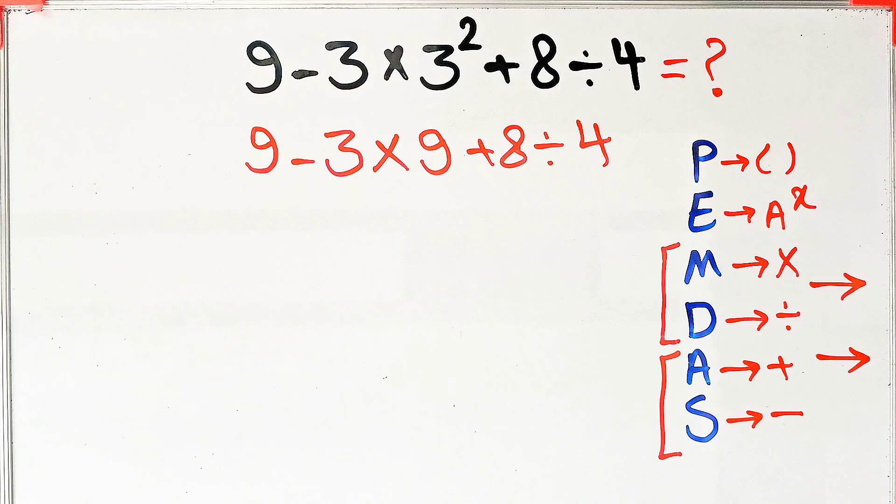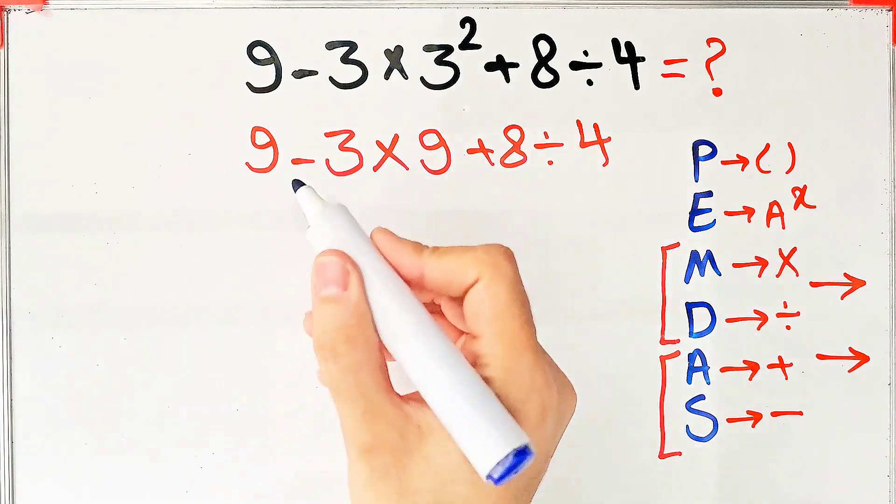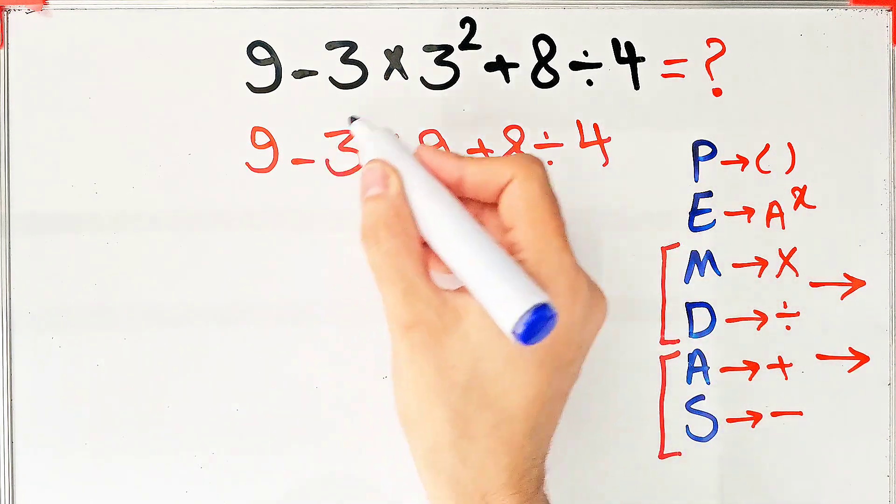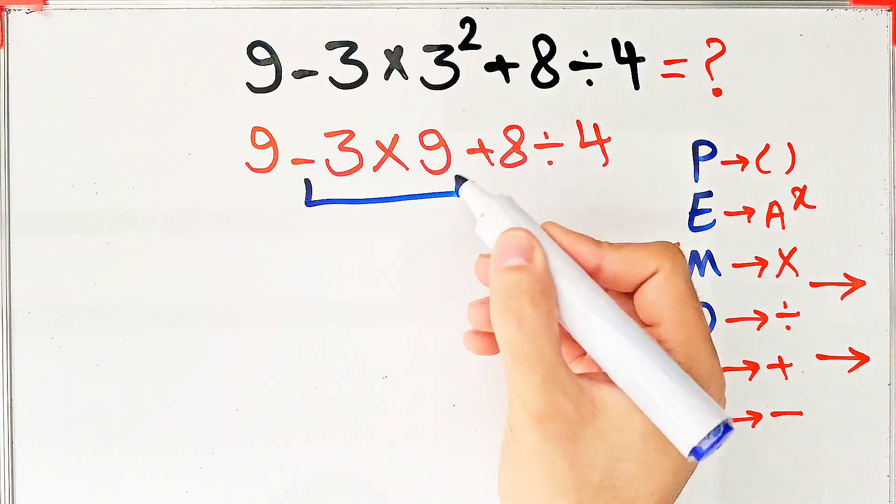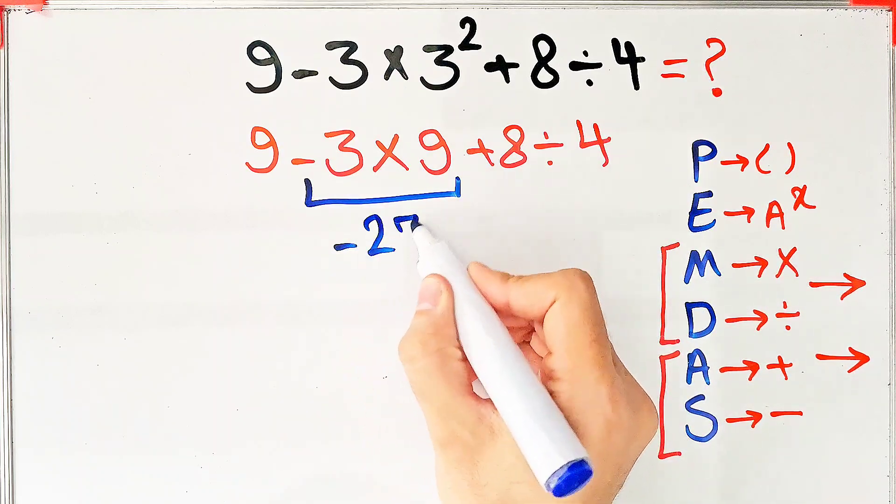Now we have subtraction, multiplication, addition, and division. First, we do this multiplication. Negative 3 times 9 equals negative 27.